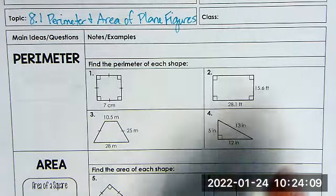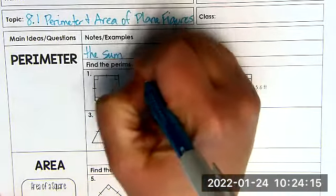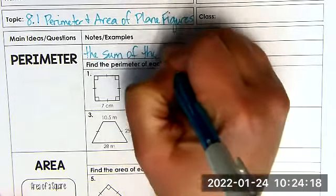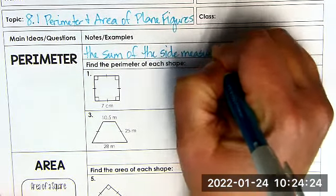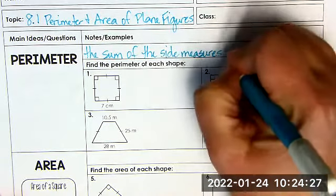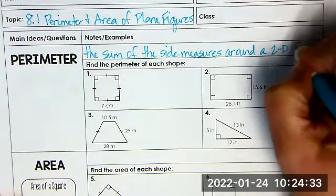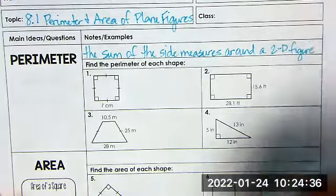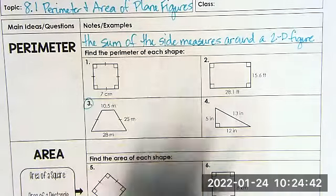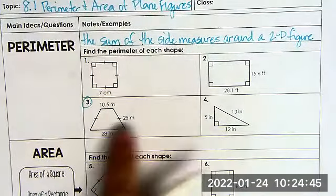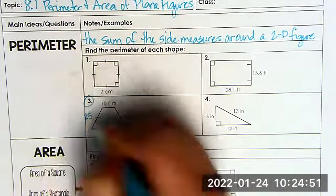Let's start off. The perimeter is the sum of the sides or side measures around a 2D figure, two-dimensional figure. I'm going to write 2D so we don't have to write all that work. Now let's work an example. We're going to look at number three. Remember, you're just adding up all the sides. The tick marks mean that that side is the same. So if this side is 25, then this side is 25.